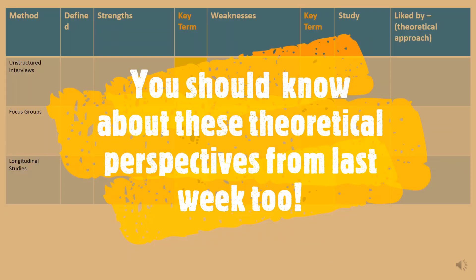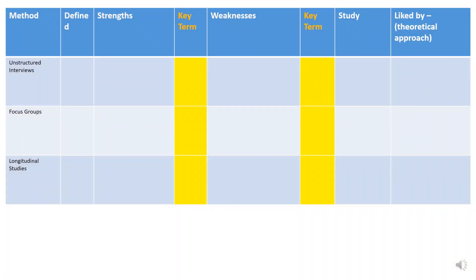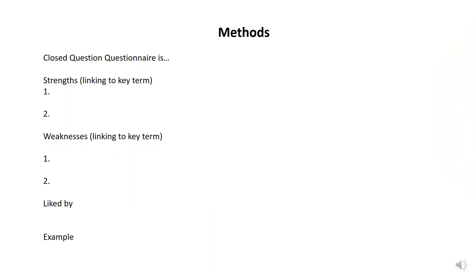So we've got unstructured interviews, focus groups, longitudinal studies, and observations. You could do it like that as a table, or you could just write notes in your normal file paper. For each method you need a definition, two strengths, two weaknesses, who they're liked by, and an example. Over the next week, this is your task to make notes on all of these things.